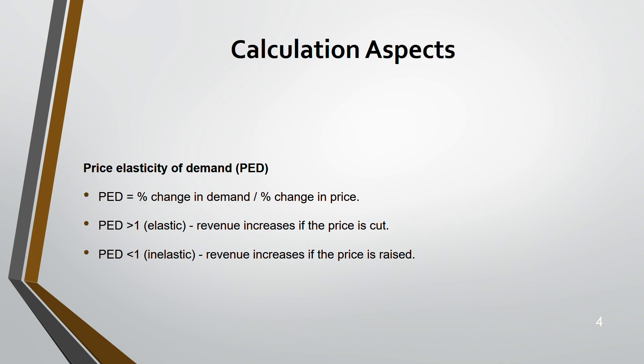For elastic products, to increase revenue you have to cut the price. For inelastic products, you can still increase revenue by keeping your price high. A very good example of inelastic products is alcohol and cigarettes — no matter how much the price is increased or how high the taxes are, consumers will keep buying them because these products are very addictive. Even if you increase the price, revenue will still increase.